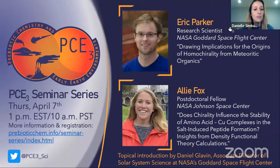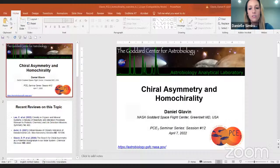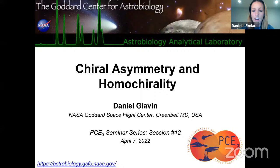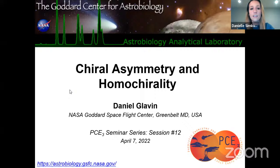To get started with today's presentations, we will first be hearing from Dr. Danny Glavin, who will present a brief topical overview of today's session theme of homochirality. Danny Glavin earned a bachelor's of science in physics from the University of California at San Diego and a PhD in earth sciences from the Scripps Institution of Oceanography. He is currently the Associate Director of Solar System Science at NASA Goddard and a member of the Astrobiology Analytical Lab. Danny is leading the organics analysis team on NASA's OSIRIS-REx mission, and he's also a member of the Curiosity Rover and the Mars Sample Return science teams.